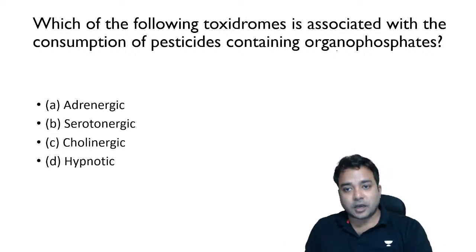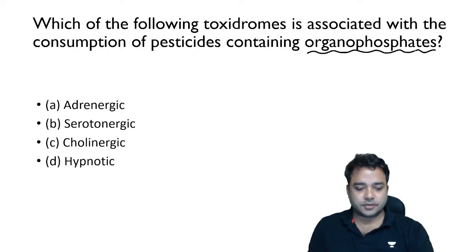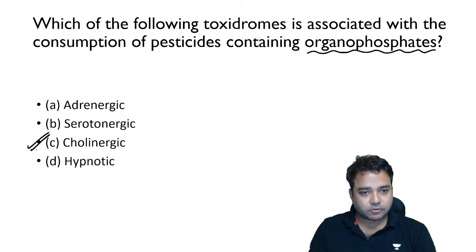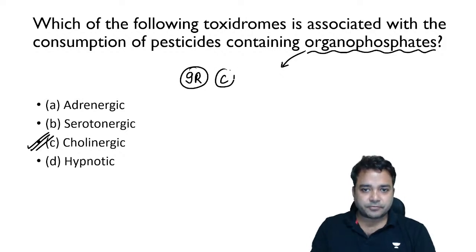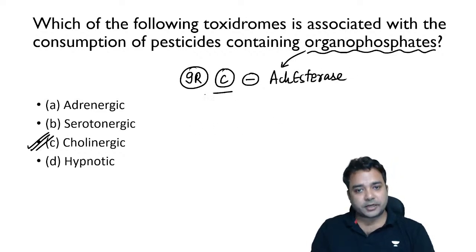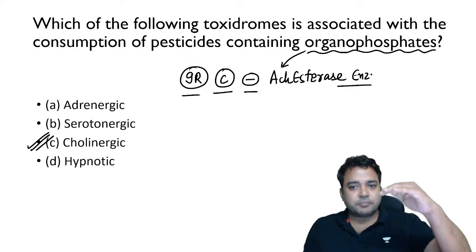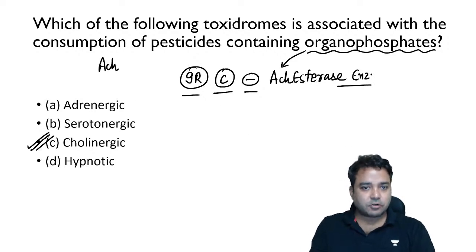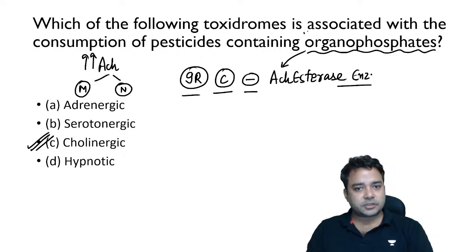Another group asked about repeatedly is organophosphorus compounds (OPCs) — agricultural poisons asked in UPSC and CMS exams. The answer is straightforward: cholinergic symptoms, because OPCs are irreversible competitive inhibitors of acetylcholinesterase enzyme. This enzyme maintains the balance of acetylcholine in the synapse and neuromuscular junctions. With inhibition, lots of acetylcholine builds up, causing muscarinic and nicotinic effects — the syndrome is cholinergic syndrome.